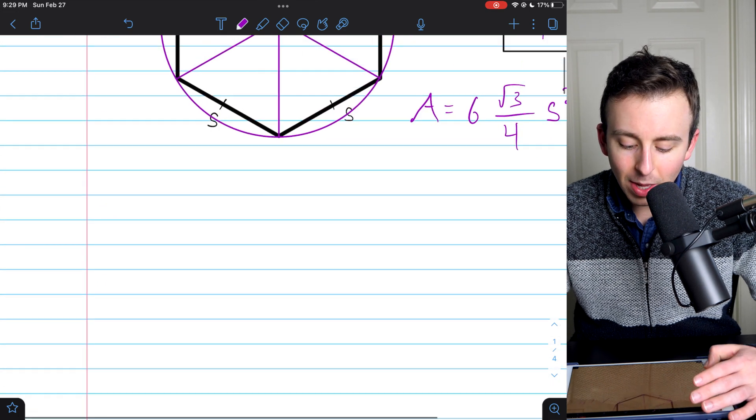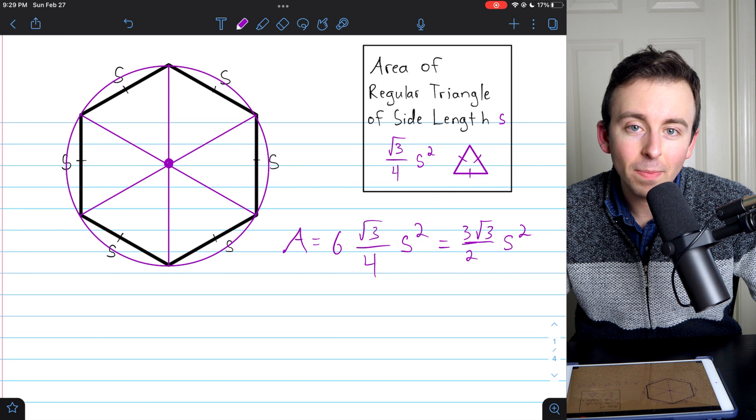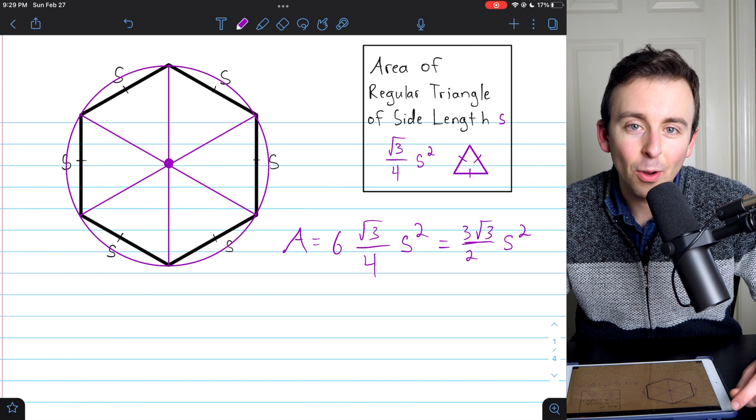So that's it. That's how we calculate the area of a regular hexagon and some details about where it comes from. Hope this lesson was helpful and let me know if you have any questions down in the comments.